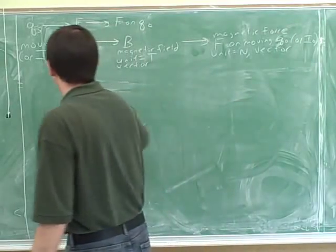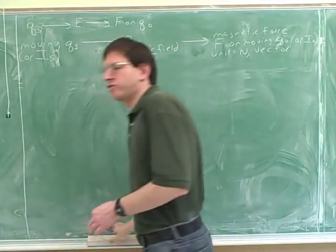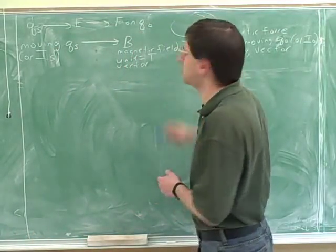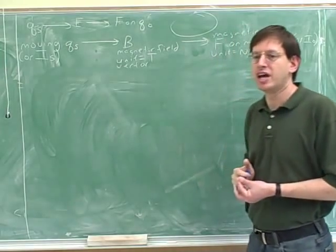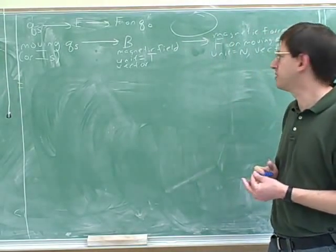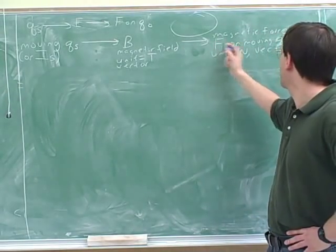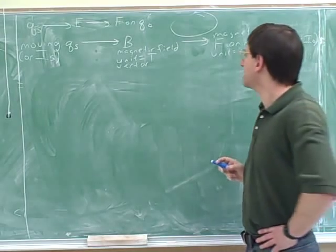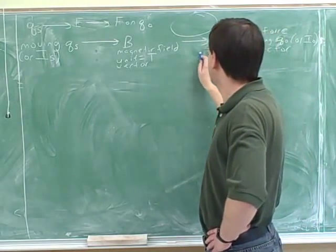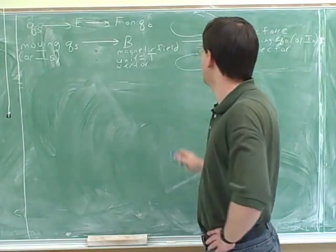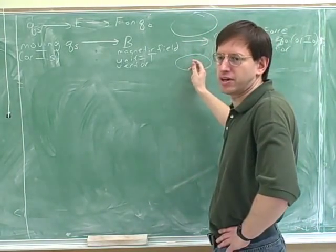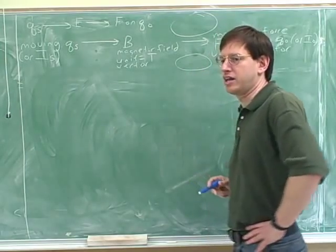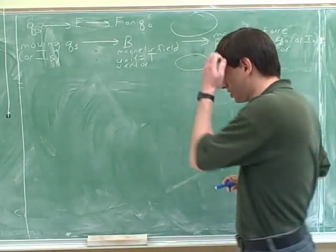All right, so all this work we've been doing so far has just been for this part of the flowchart — how to figure out the direction of the magnetic force on a test charge. The next logical thing is to figure out this part of the flowchart, which tells us the magnitude of the magnetic force on a test charge.